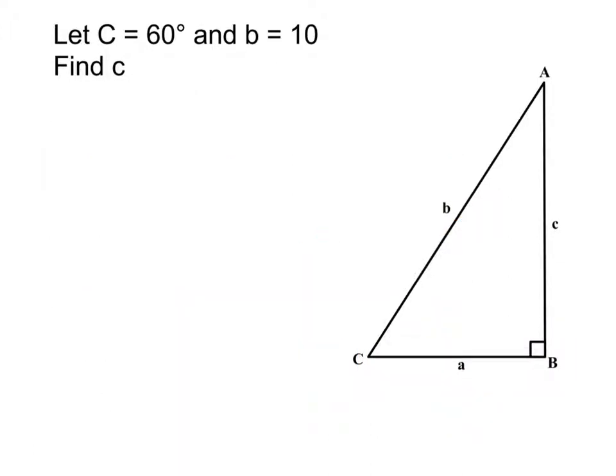Right now for this problem we start the same way where we think about what do we label each of our parts. And so again angle C is 60 degrees this time, and then B is 10, and then I'm looking to find C. And so once again I have to start by deciding what do I call each of the sides. Well, side B, nothing changed there. It's still the hypotenuse. So then what's side C? It's on the opposite side from our angle. So yes, we call it the opposite.